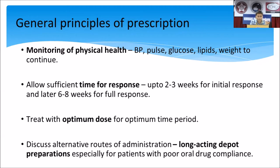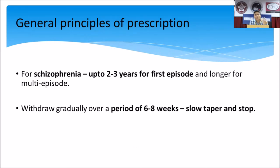Use long-acting preparations especially for those who have poor oral drug compliance. Regarding how long to prescribe antipsychotics — for the first episode, it is usually prescribed for one to two years, or two to three years. If there are recurrent episodes, guidelines mention that antipsychotics may be prescribed indefinitely. There is no clear-cut period, but usually for one episode you consider about two years, and for subsequent episodes it can become indefinite.